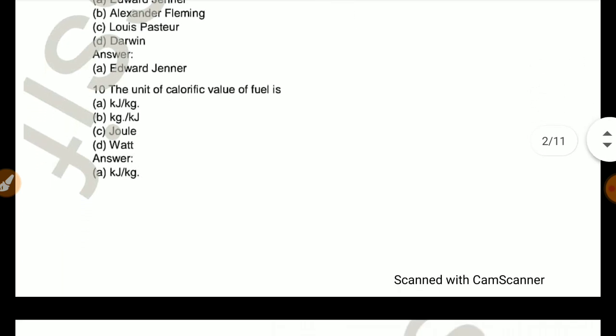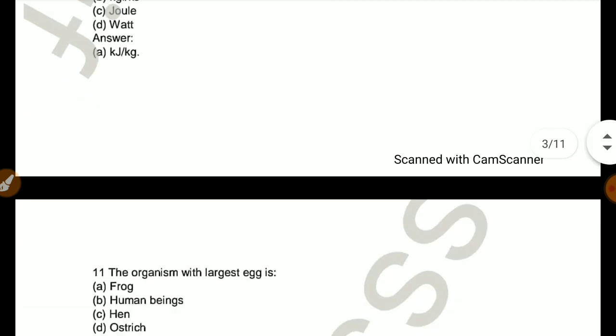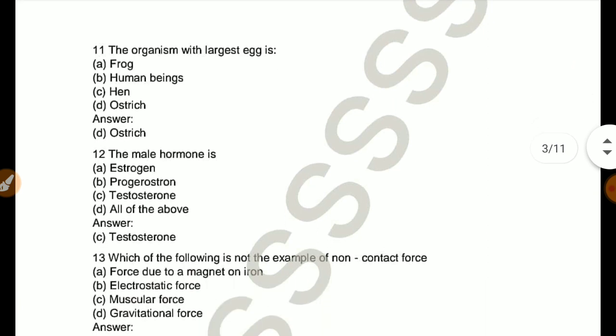The unit of calorific value of fuel is kJ per kg. The organism with largest egg is ostrich.